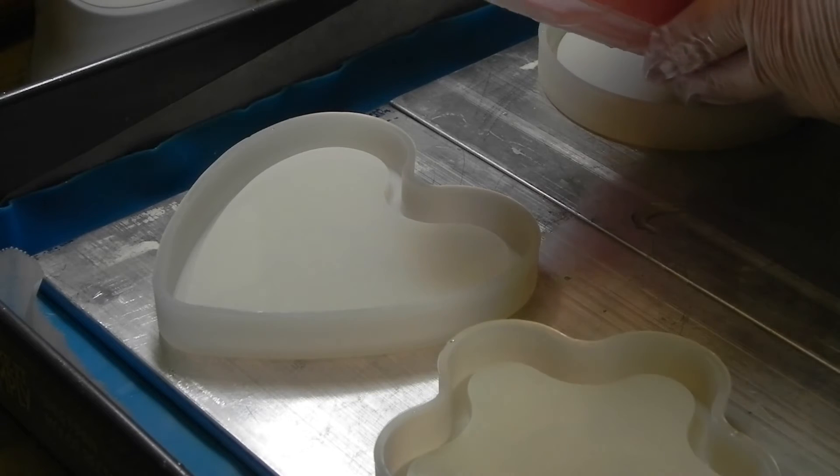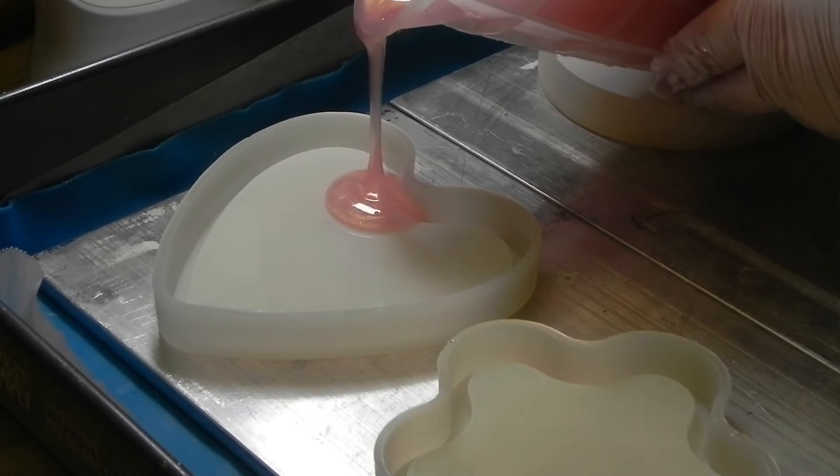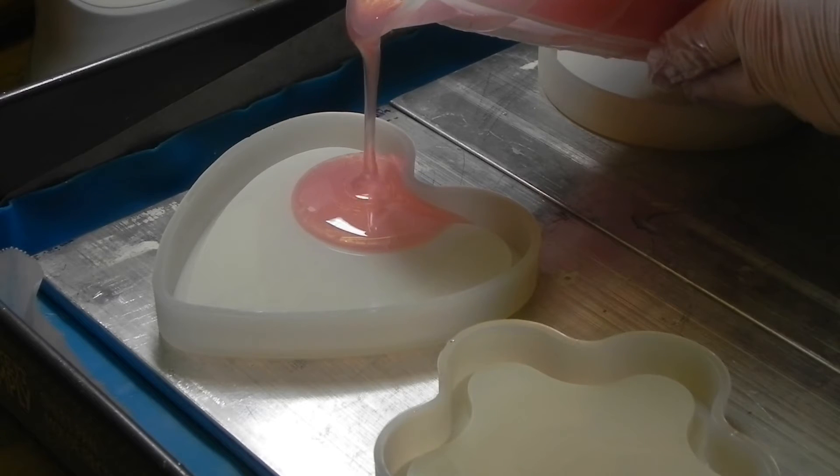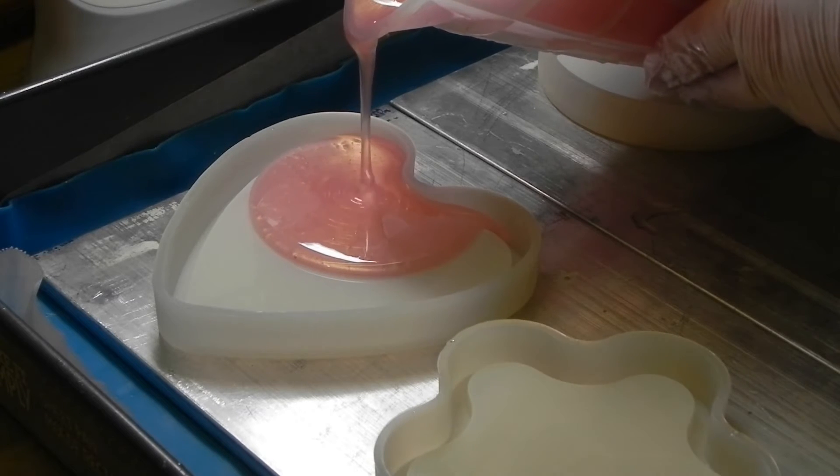For a solid colored pour, start on one edge of the mold and carefully pour enough to fill the bottom, letting the resin spread. This will help to prevent bubbles from settling.